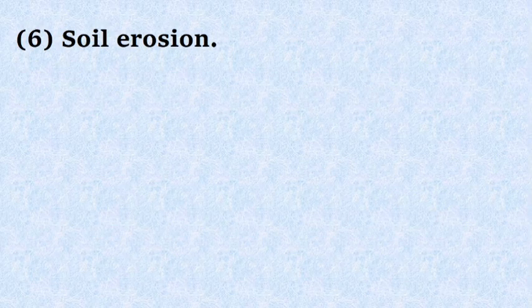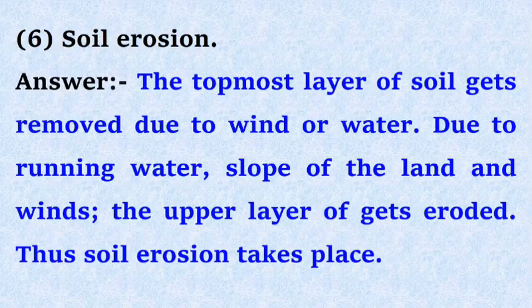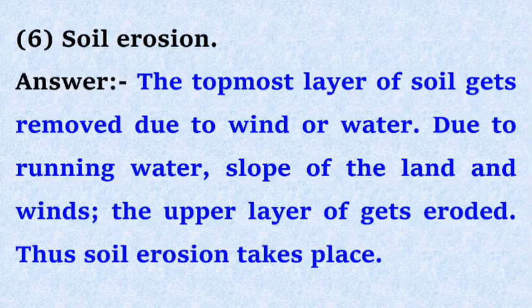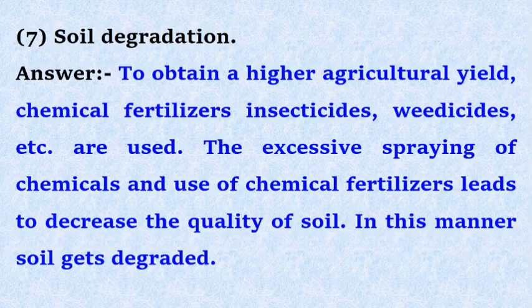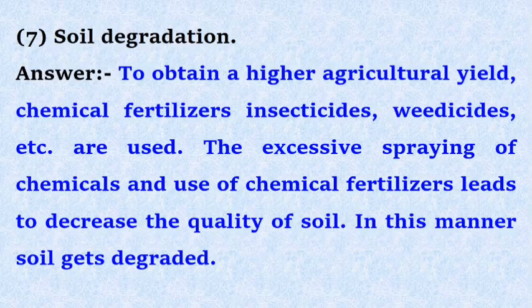Sixth, soil erosion. Answer: The topmost layer of soil gets removed due to wind or water. Due to running water, slope of the land, and winds, the upper layer of soil gets eroded. Thus, soil erosion takes place. Seventh, soil degradation. Answer: To obtain higher agricultural yield, chemical fertilizers, insecticides, pesticides, weedicides, etc. are used. Excessive spraying of chemicals and use of chemical fertilizers leads to a decrease in the quality of soil. In this manner, soil gets degraded.